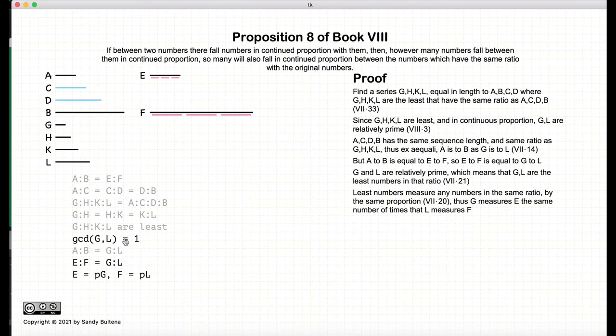Now, according to Proposition 20 of Book 7, since g and l are the least numbers to create that particular ratio, then g will measure e and l will measure f by the same number. So we have e is equal to some number p times g, and f is equal to p times l.